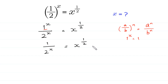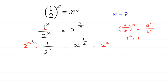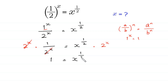Now, we multiply both sides of this equation by 2 to the power x. On the left side, 2 to the power x cancels with 2 to the power x, leaving 1 equal to x to the power 1 over 2 times 2 to the power x.